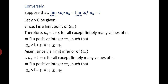Conversely, suppose lim_{n→∞} sup(a_n) = lim_{n→∞} inf(a_n) = l. Let epsilon > 0 be given. Since l is the limit superior of a_n, we have a_n < l + epsilon for all except finitely many values of n. This implies there exists a positive integer m_1 such that a_n < l + epsilon for all n ≥ m_1. Since l is the limit inferior of a_n, we get a_n > l - epsilon for all except finitely many values of n, implying there exists m_2 such that a_n > l - epsilon for all n ≥ m_2.